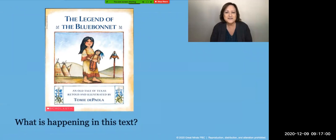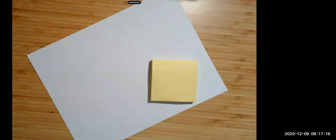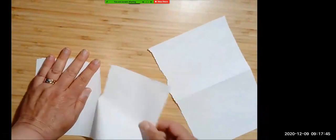Let's read this question together: what is happening in this text? We'll be using story elements so we can better understand what is happening in the Legend of the Blue Bonnet. As we work together to explore the story elements, we'll need four small pieces of paper. You have a choice: if you'd like to use four post-its you can, or if you have a piece of paper we can tear that into four different pieces.